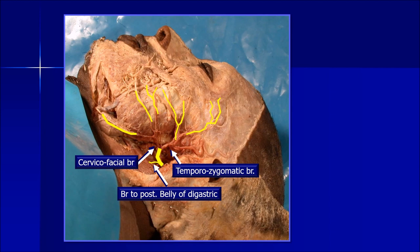More posteriorly is the mastoid process, not seen in this dissection. This stem of the facial nerve is short — it runs for a short distance and immediately divides into an upper division and a lower division. The upper division is called the temporozygomatic branch, and the lower one is the cervicofacial branch. From these the various branches are given off: the upper division gives rise to temporal and zygomatic branches, while the other three branches or their sub-branches are ultimately given off from the lower division.